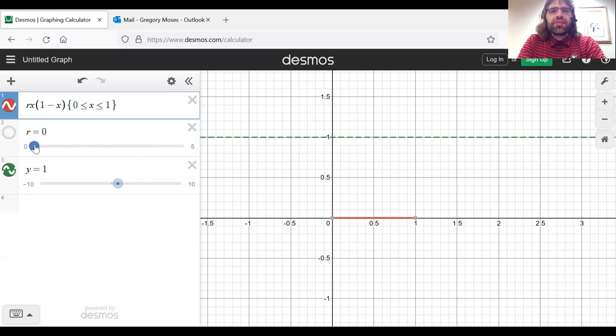As long as r is between zero and four, the value we get is going to be between zero and one.